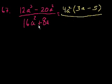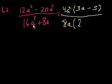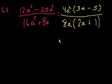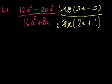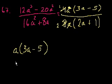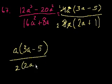Now the denominator: both terms are divisible by 8a, so let's factor that out. 16a squared divided by 8a is 2a, and 8a times 1 is 8a. So the denominator is 8a times 2a plus 1. Now we can cancel: the 4 and 8 simplify to give a factor of 2, and a squared divided by a leaves a single a. We're left with a times 3a minus 5 over 2 times 2a plus 1.